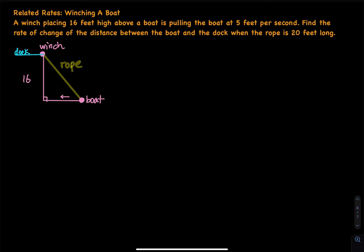This is a related rates problem. Usually when you get a related rates problem on a test or on homework, they don't give you any graphs. They expect you to be able to draw the graph by yourself. So this graph, I already drew it for you. We have a winch that is placed 16 feet high above the boat. Here is the boat, and here is the rope.